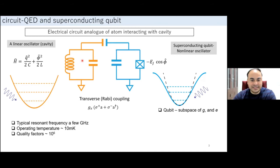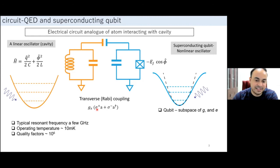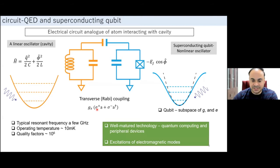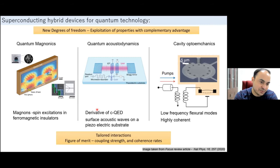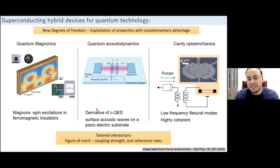By coupling electric cavities and superconducting qubits through capacitors or mutual inductance, one can achieve transverse coupling where excitations swap between qubit and cavity. Circuit QED is a mature technology with applications in quantum computing. The excitations in these systems are photons — excitations of electromagnetic modes. A key question is: can we add new degrees of freedom to this platform to create hybrid devices?